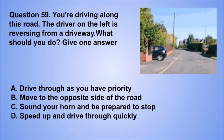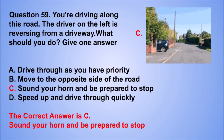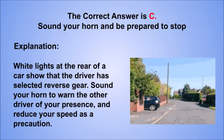Question 59. You're driving along this road. The driver on the left is reversing from a driveway. What should you do? Give one answer. A. Drive through as you have priority. B. Move to the opposite side of the road. C. Sound your horn and be prepared to stop. D. Speed up and drive through quickly. The correct answer is C, sound your horn and be prepared to stop. White lights at the rear of a car show that the driver has selected reverse gear. Sound your horn to warn the other driver of your presence, and reduce your speed as a precaution.